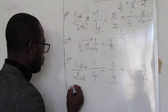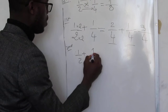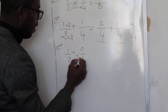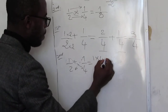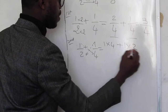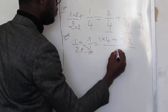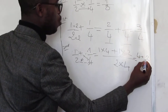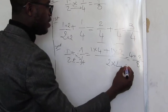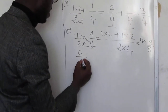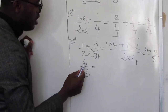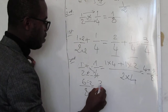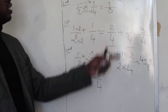The second method for 1 over 2 plus 1 over 4 is cross multiplication. We do: 1 times 4 plus 1 times 2, all over 2 times 4. That gives us 4 plus 2 over 8, which is 6 over 8. Now we simplify: 6 and 8 are both multiples of 2, so we divide by 2. 6 divided by 2 is 3, and 8 divided by 2 is 4. So the answer is 3 over 4 — the same answer.